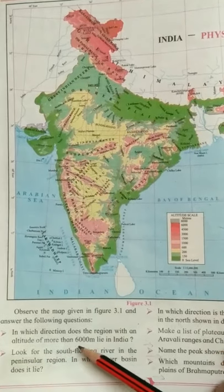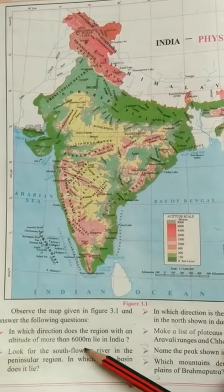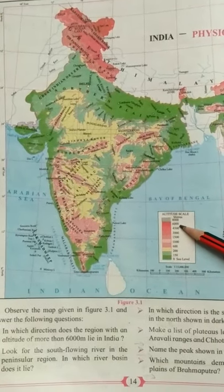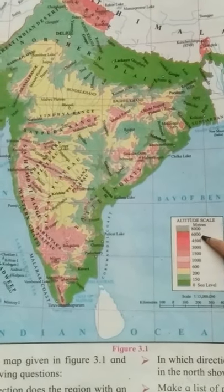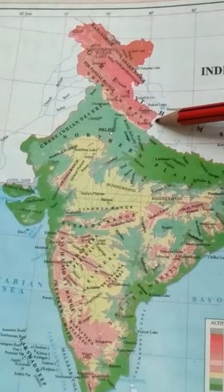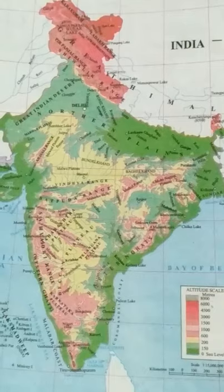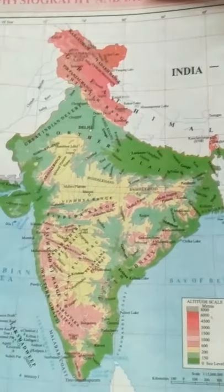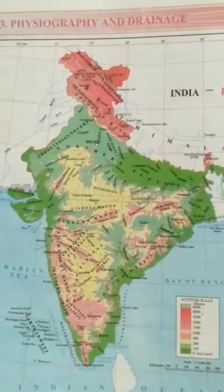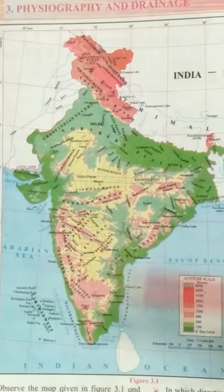The first question is: in which direction does the region with an altitude of more than 6000 meters lie in India? The 6000-meter altitude is shown in gray and red color. We can see this altitude in the north, since the upper side of the map is always north. Therefore, the answer is: the altitude of more than 6000 meters lies in the north of India.